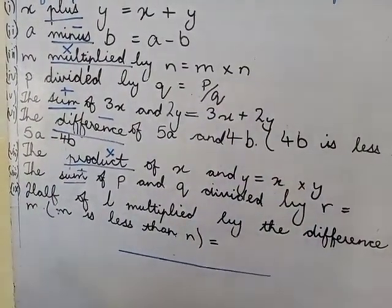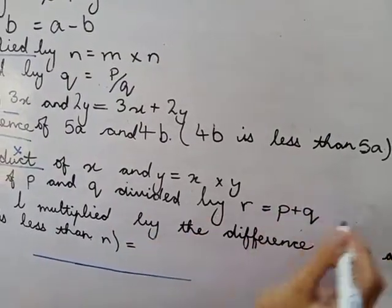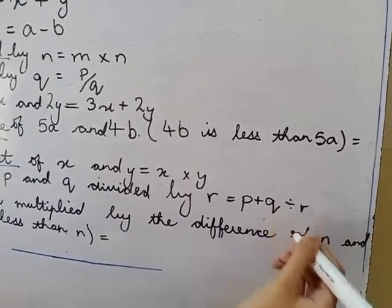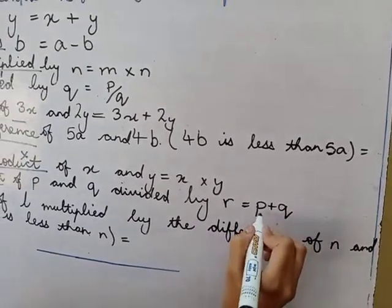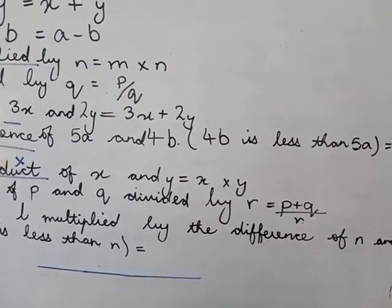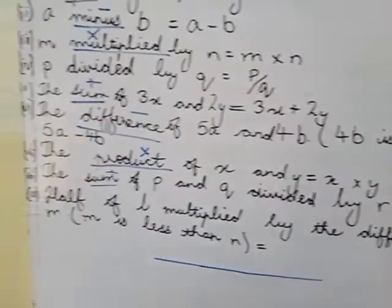P plus Q divided by R. Instead of writing the sign of division, we should write P plus Q over R. It also means sum of P and Q divided by R.